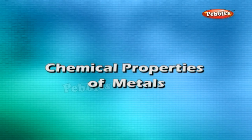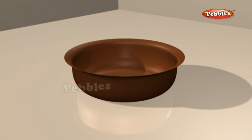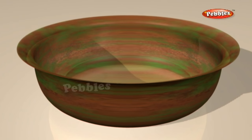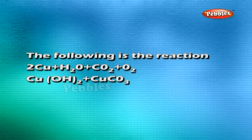Chemical properties of metals: When a copper vessel is exposed to moist air for long, it acquires a dull green coating. The green material is a mixture of copper hydroxide Cu(OH)2 and copper carbonate CuCO3. The reaction is: 2Cu + H2O + CO2 + O2 → Cu(OH)2 + CuCO3.